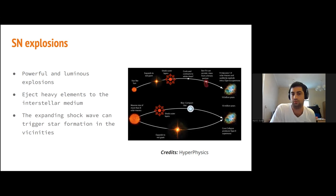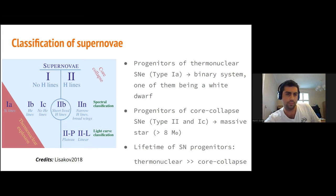Historically, supernovae have been classified as with or without hydrogen lines in the spectra. I don't want to focus on thermonuclear explosions. I want to focus on core-collapse supernovae higher than eight solar masses, specifically Type II that shows helium and hydrogen lines in the spectra.